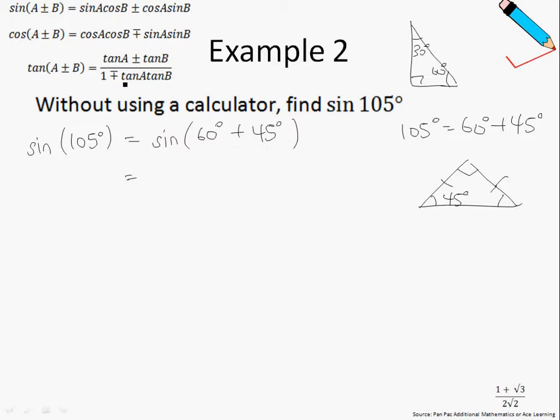So let me just break this down using the addition formula. I'll be using the first formula here. So sine of 60 degrees plus 45 degrees can be broken down into sine of 60 degrees cosine of 45 degrees plus cosine of 60 degrees sine of 45 degrees.